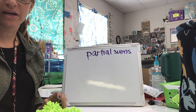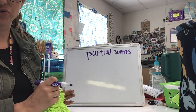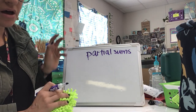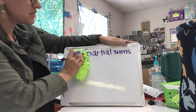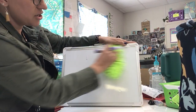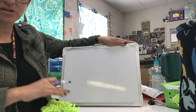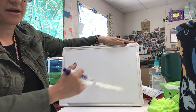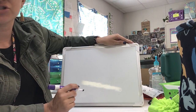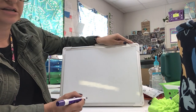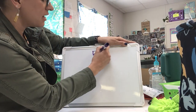We're going to be using the math strategy called partial sums. When you have partial sums, essentially you are just looking at the parts of a math equation. You're breaking it into tens and ones and you're looking at both parts.